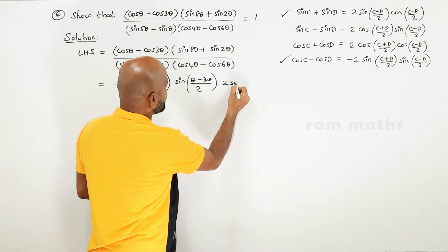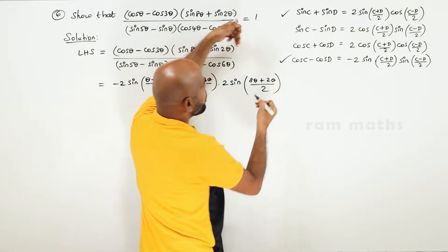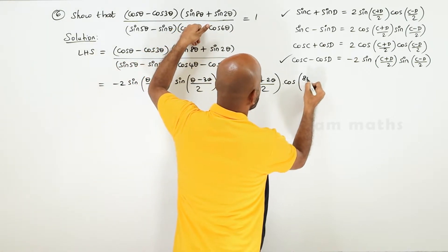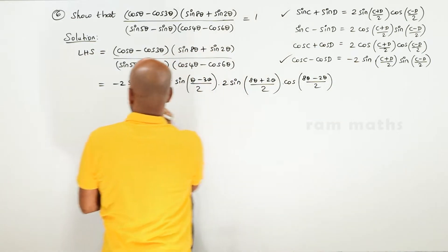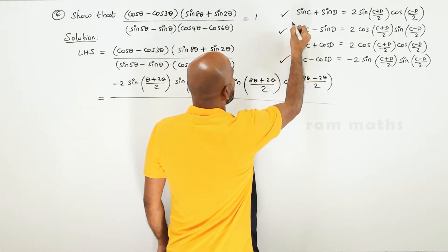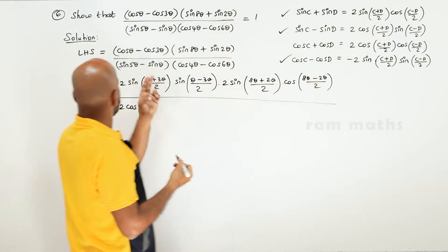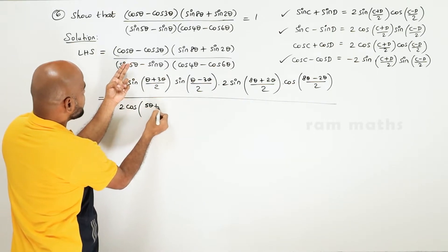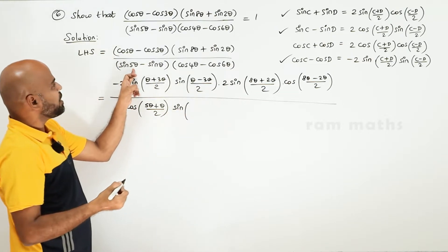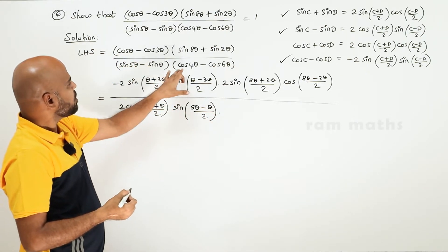2 into sin (C plus D) by 2 — so 8 theta plus 2 theta by 2 — into cos (C minus D) by 2 — so 8 theta minus 2 theta by 2. Numerator and denominator formula applied. Divided by sin C minus sin D: 2 into cos (C plus D) by 2, with 5 theta for C plus D and theta by 2.